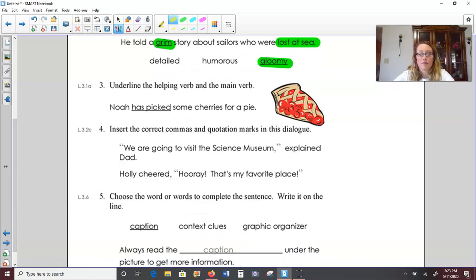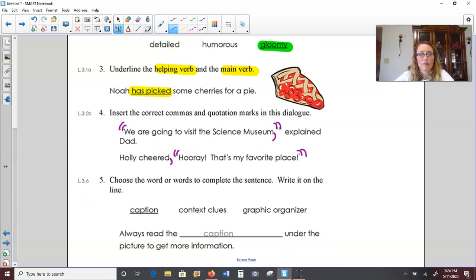Number three, underline the helping verb and the main verb. Noah has picked some cherries for a pie. Helping verb helps out that main verb. He has picked some cherries. Number four, putting our commas and quotation marks into the dialogue. We are going to visit the science museum, explained dad. Quotation marks around what dad is saying, and then a comma after museum to separate the words from our speaker. Holly cheered. Hooray, that's my favorite place.